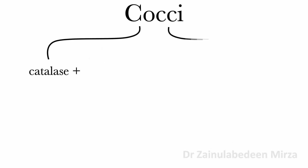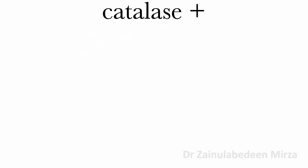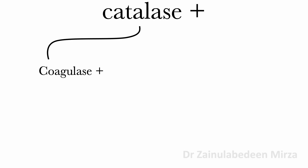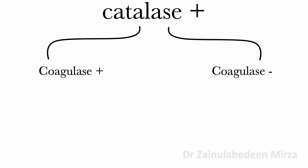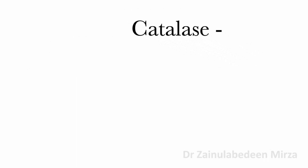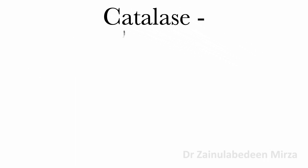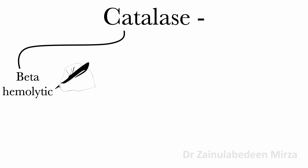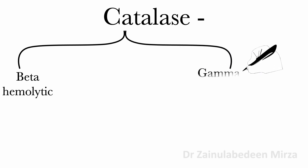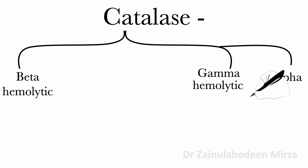Cocci are divided into staphylococcus, which is catalase positive, and streptococcus, which is catalase negative. Staphylococcus catalase positive is divided into coagulase positive such as Staphylococcus aureus, and coagulase negative such as Staphylococcus epidermidis. Streptococcus catalase negative is divided into beta-hemolytic such as pyogenes and agalactiae, gamma-hemolytic such as enterococcus, and alpha-hemolytic such as pneumoniae.